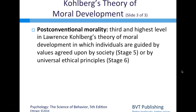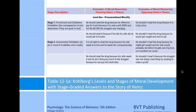Post-conventional morality is the third and highest level, where individuals are guided by values agreed upon by society or by universal ethical principles. Stage six represents universal ethical principles. This information is found in Table 12-1 on pages 486 and 487 of your textbook.